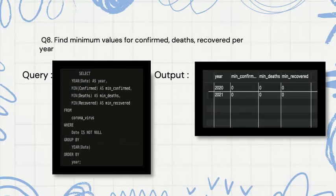Then we are finding the minimum value for confirmed, deaths, and recovered per year. We are using the aggregate function MIN for confirmed, deaths, and recovered, and we are grouping and ordering by year.